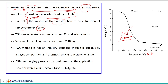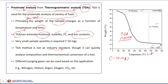Once we have the TGA curve, we can easily estimate the moisture, volatile matter, char, and ash content in a given sample. TGA can estimate moisture, volatiles, fixed carbon, and ash content. One advantage of this technique is that it requires a very small quantity of sample, close to only 10 milligrams. Although TGA is not an industry standard, it can quickly analyze composition and thermochemical conversion of a fuel.